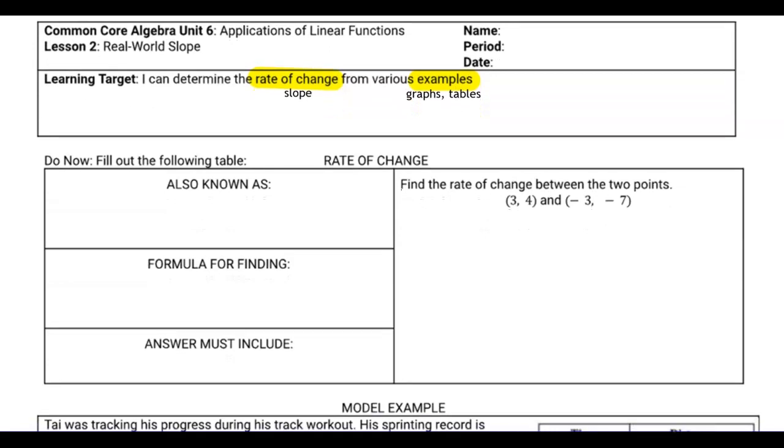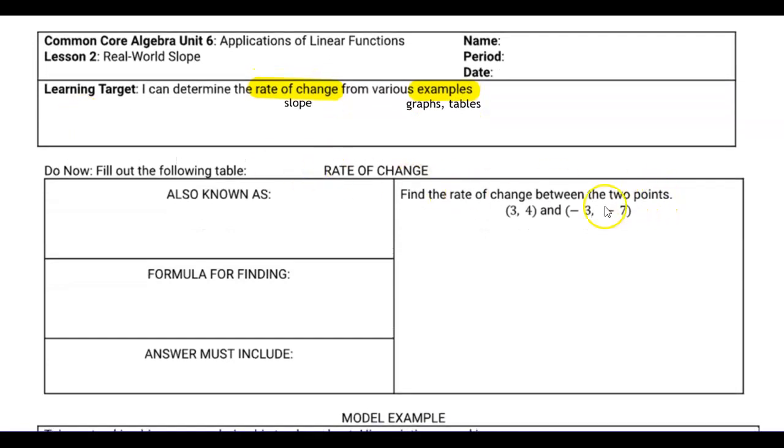So for the do now, you're supposed to fill out the following table and then find the rate of change between the two points. Try to fill these out first. So pause the video, try this one out, and then come back to see if you got it right. So you should know that rate of change is also known as the slope or the pattern or the rise over run. The rate of change tells you how the pattern or the linear function is changing over time. If it's a positive number, it means it's increasing over time. And if it's a negative number, well, it means it's decreasing over time.